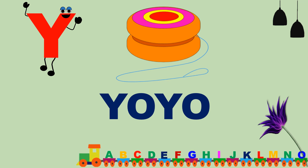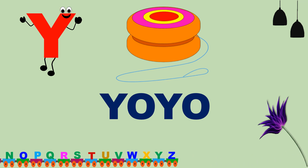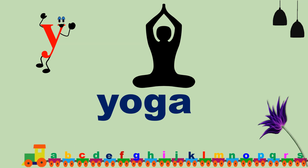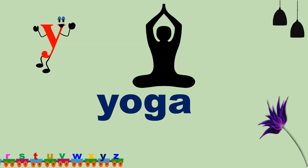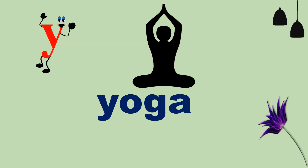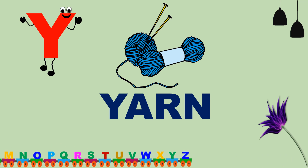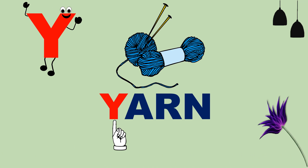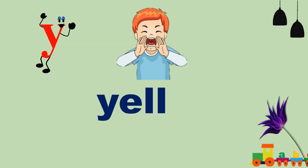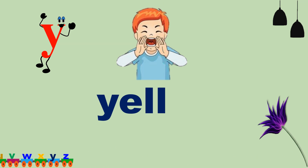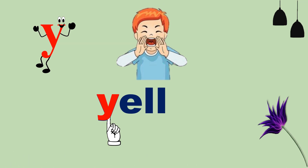This is a Yoyo. Where is the Captain Y? Here and there. Where is the small y? Here it is. This is a Yon. Where is the Captain Y? Here it is. Where is the small y? Here it is.